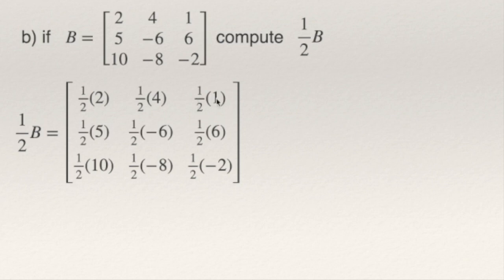This entry will be 5 over 2. This entry will be negative 6 over 2, that is negative 3, etc. So that will be the answer. Every entry of the matrix multiplied by 1 half.